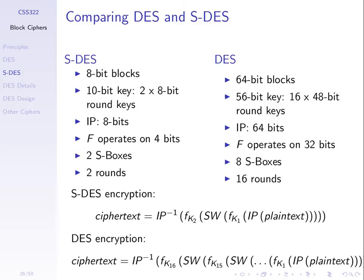Comparing simplified DES to real DES: simplified DES takes 8-bit blocks, real DES takes 64 bits. Real DES uses 16 rounds instead of just 2, but the same function is repeated. We start with a 64-bit key, throw away 8 bits, giving us effectively a 56-bit key, and generate 16 round sub-keys. In simplified DES we created K1 and K2, just 2 round keys. The initial permutation is 64 bits, and there are 8 S-boxes, not 2.